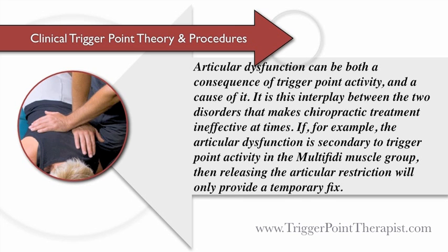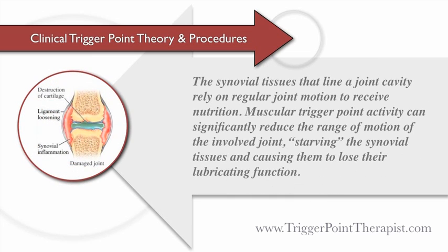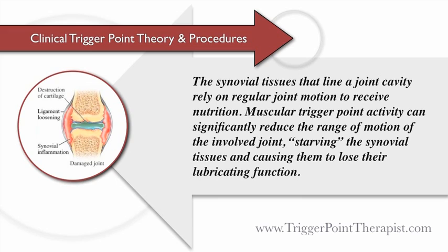Articular dysfunction can be both a consequence of trigger point activity and a cause of it. It is this interplay between the two disorders that makes chiropractic treatment ineffective at times. For example, if the articular dysfunction is secondary to trigger point activity in the multifidi group, then releasing the articular restriction will only provide a temporary fix. The synovial tissues that line a joint cavity rely on regular joint motion to receive nutrition. Muscular trigger point activity can significantly reduce the range of motion of an involved joint, starving the synovial tissues and causing them to lose their lubricating function.